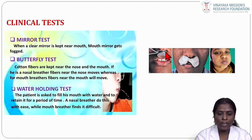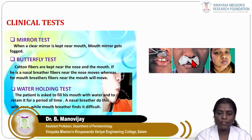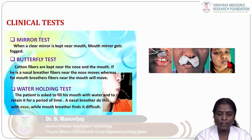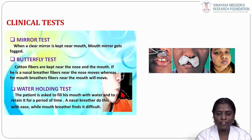In the butterfly test, cotton fibers shaped like a butterfly are placed near the nose and the mouth. If the patient is a nasal breather, fibers near the nose move; for mouth breathers, fibers near the mouth will move. In the water-holding test, the patient is asked to fill the mouth with water and retain it for a period of time. A nasal breather does this with ease, while a mouth breather finds it difficult.